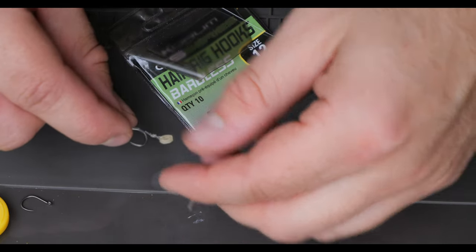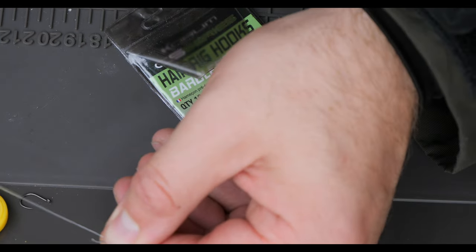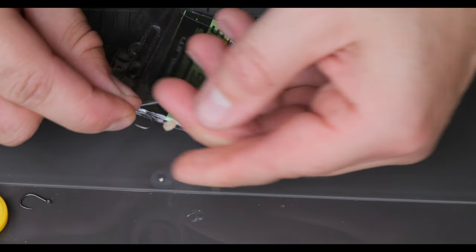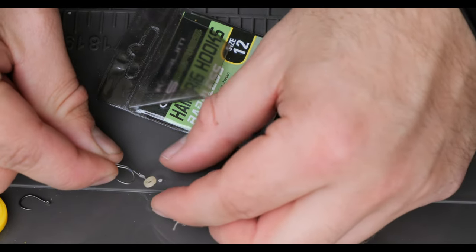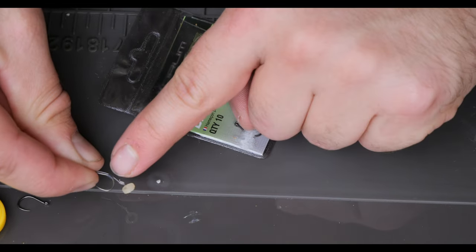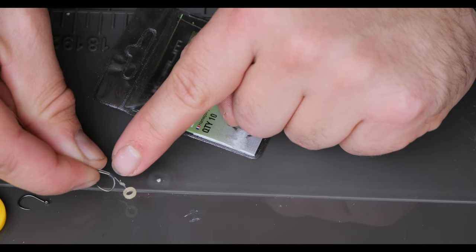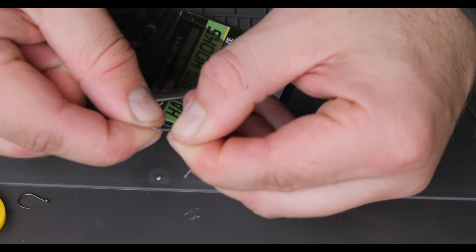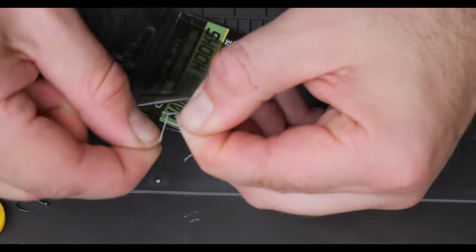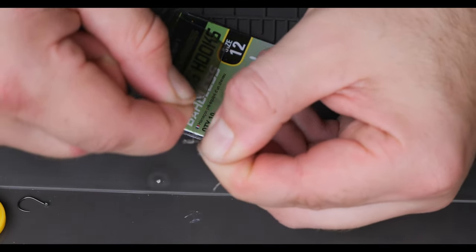Now what I want to do is pass the tag end through the eye of the hook back to front. And now we're going to whip that hook on using our knotless knot. So all that little bit of rig tubing is doing is pinning that against the shank of the hook.